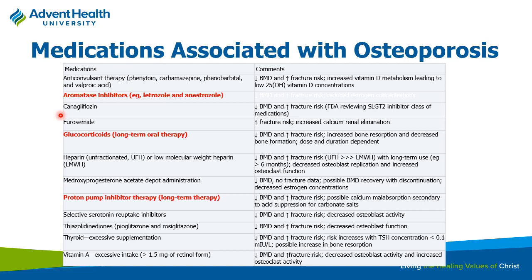Proton pump inhibitors can also play a role. When you're on a PPI, stomach pH goes up. Calcium needs an acidic medium to solubilize and absorb well. So patients on PPIs for GERD may not absorb calcium well, PTH levels start to rise, and the body leaches calcium from the bones. Many other drugs can play a role too—keep these in mind.